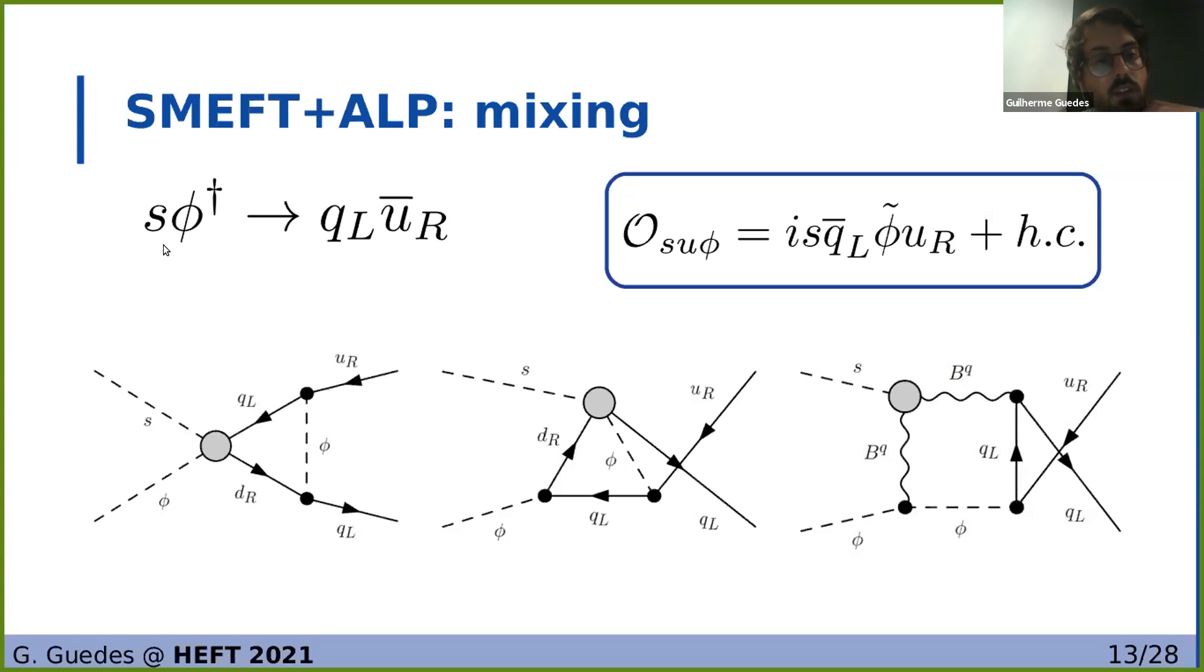By looking at these diagrams you can also see the mixing effect. So for instance if we look at the process s phi dagger going to the left-handed quark and to the right-handed up-antiquark, this divergence to this process would be absorbed by the Yukawa-like up operator. However we can generate it with insertions of different dimension five operators as we see here with the insertions of the Yukawa-like down operators or the couplings to gauge bosons. So in principle we can have a situation in which this coupling is zero but can be generated through the running through the insertions of different operators.